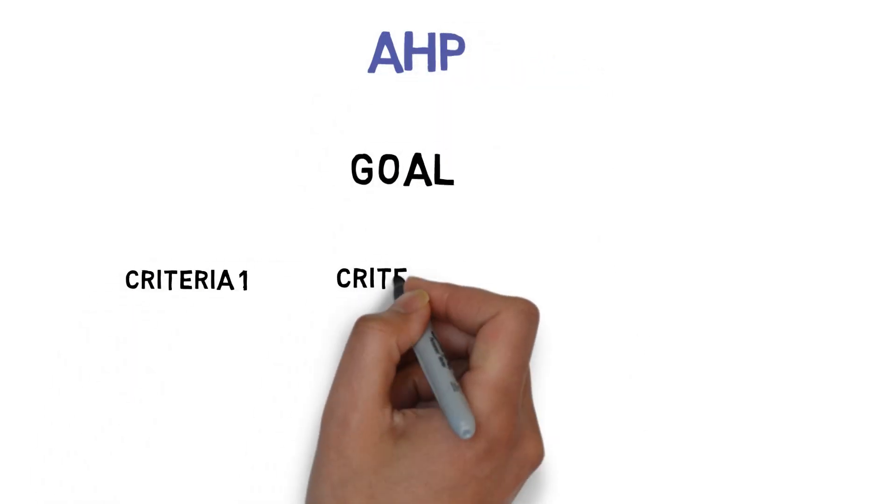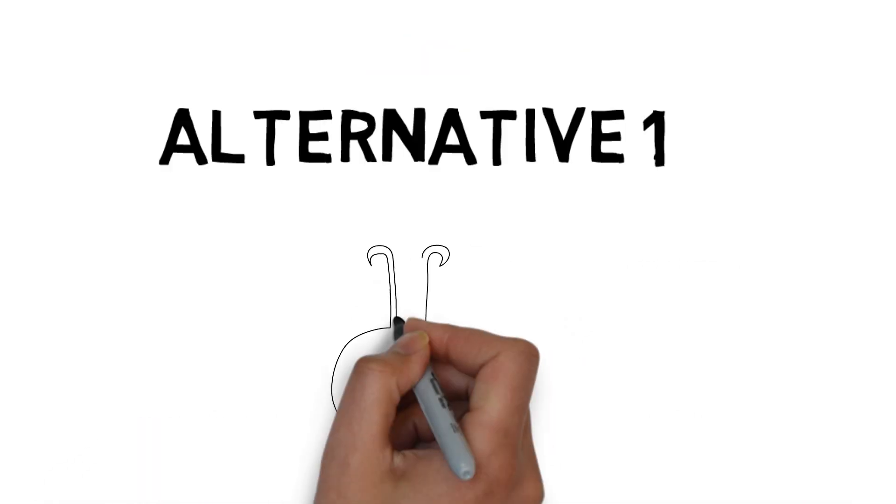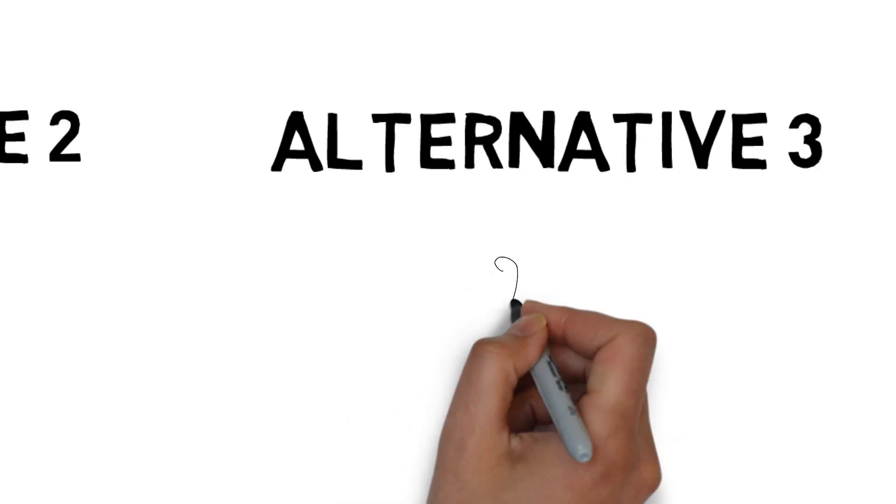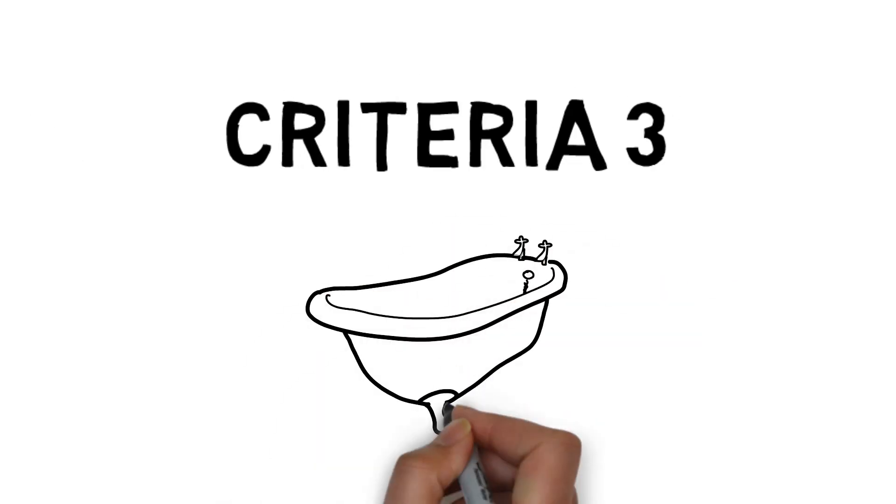One solution to this is to use an analytical hierarchy process. AHP lets us break down our problem into a subset of smaller problems, composed of a goal, objectives, and our alternative solutions.